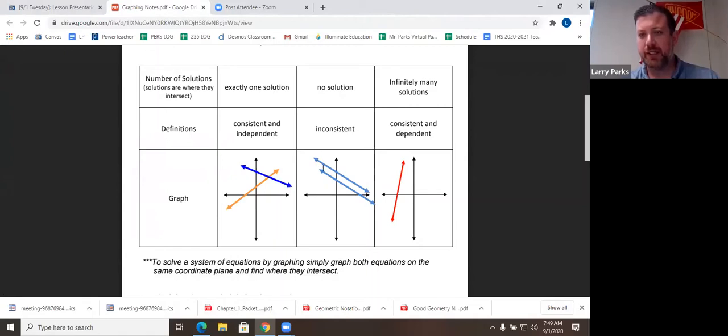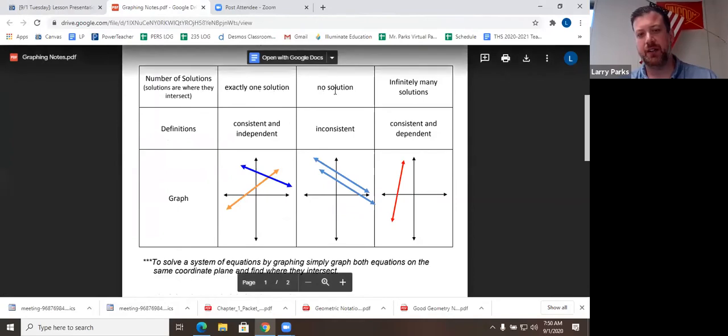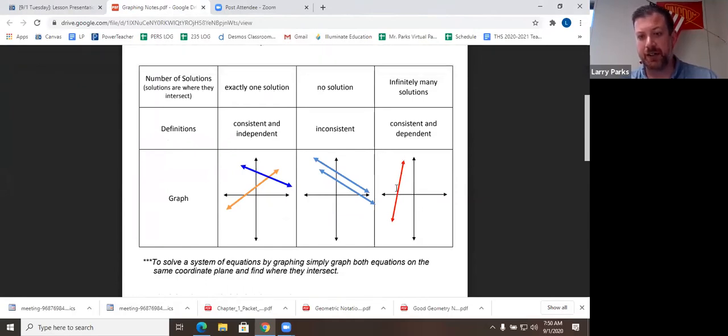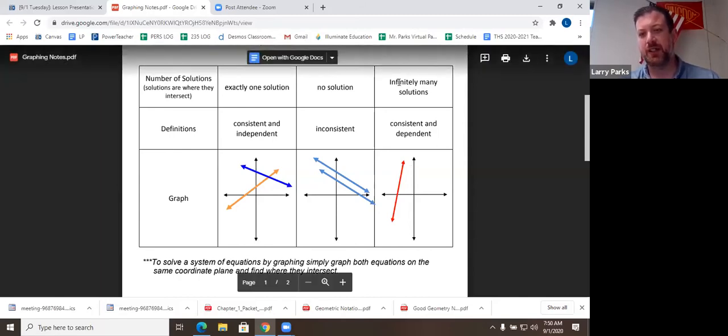However, you could end up with two lines that we call parallel, and those will never cross. So that means there's no coordinate that makes both of those true. And so we would say, no solution. Or it could end up being the same line. So it would be a line, and then you graph the other one, and it's right on top of it. So technically, every single coordinate is a solution. There's too many solutions to list. So that's why we use the word infinite.